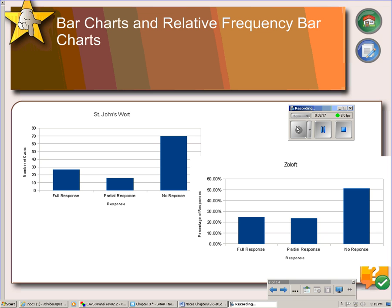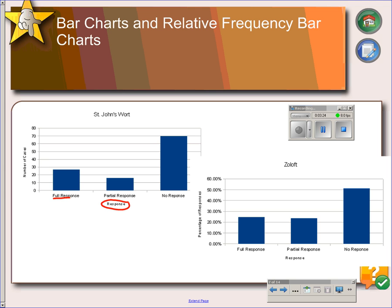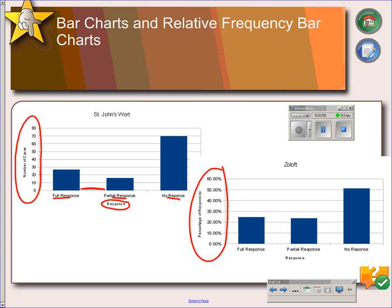The horizontal axis should include the name and the possible categories. So the name of this is 'response,' and the categories are full response, partial response, and no response. The bars need to have spaces between them — the space indicates that the bars are freestanding and can be rearranged into any order. The vertical axis can be frequency or relative frequency, where it's been turned into percentages. In either case, you have to have a numbering scale, and it has to start at zero.